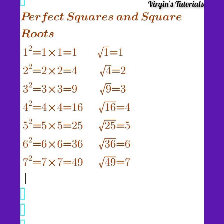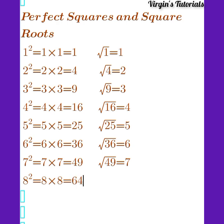Now we go again — we have 8, that is 8 raised to the power 2. 8 raised to the power 2 is equal to 8 times 8, which is equal to 64. From the square root side, the square root of 64 is still equal to 8.